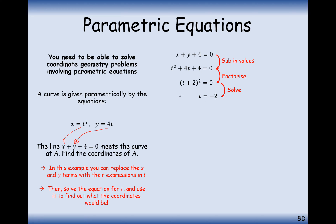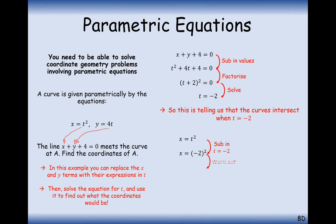Plugging t equals minus two back into the parametric equations gives x equals four and y equals minus eight. So you can substitute parametric equations into Cartesian equations to find intersection points. Alternatively, you could create a Cartesian equation and solve simultaneous equations in x and y, but this substitution method is probably easier here.